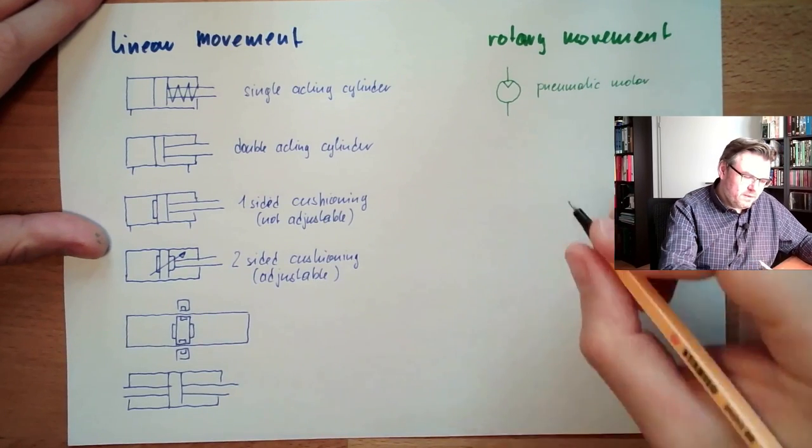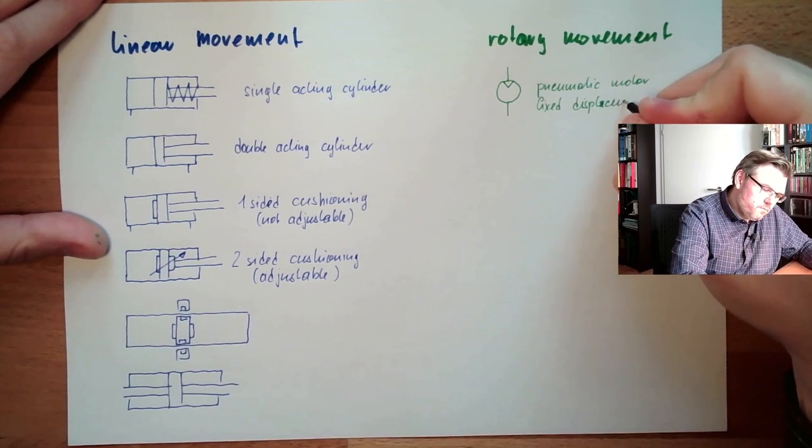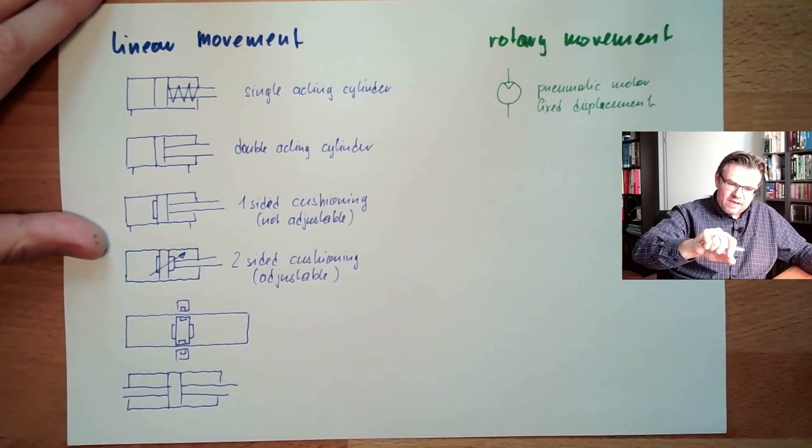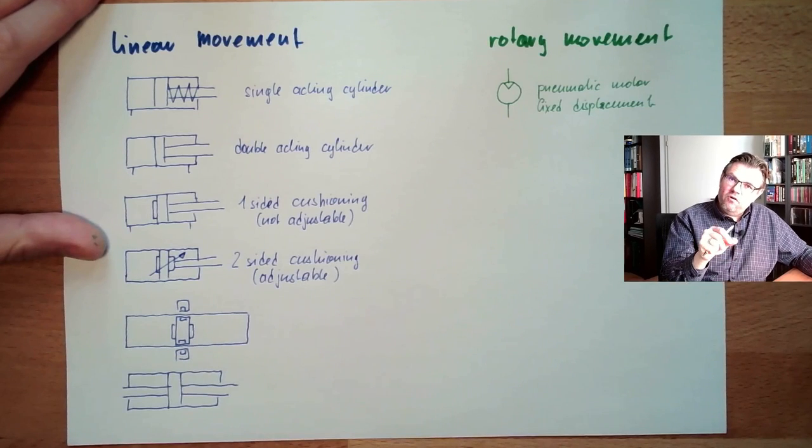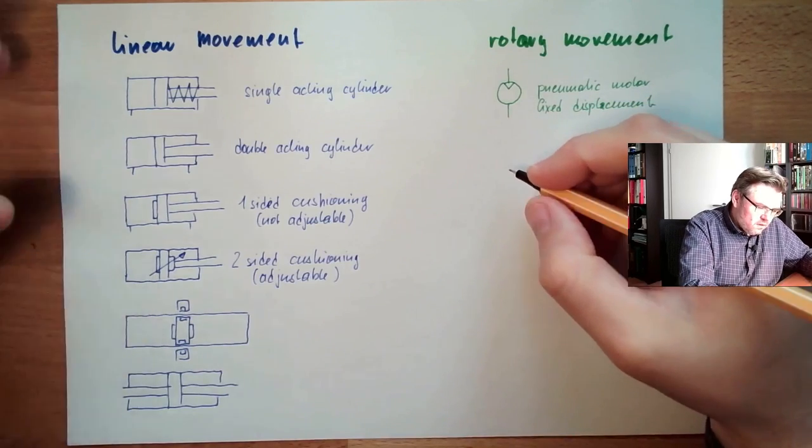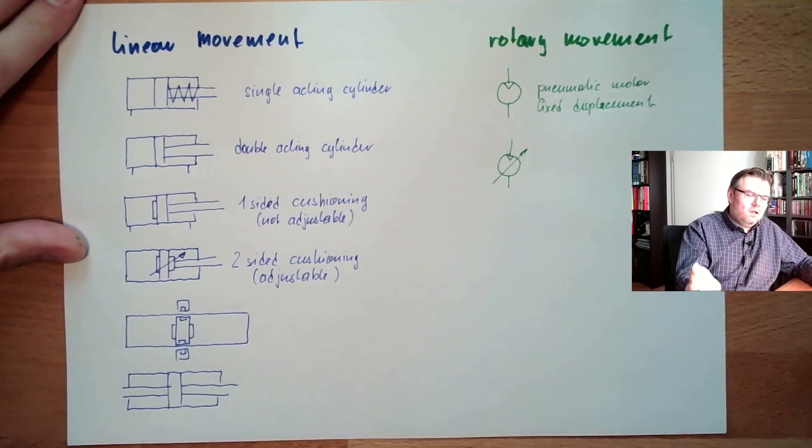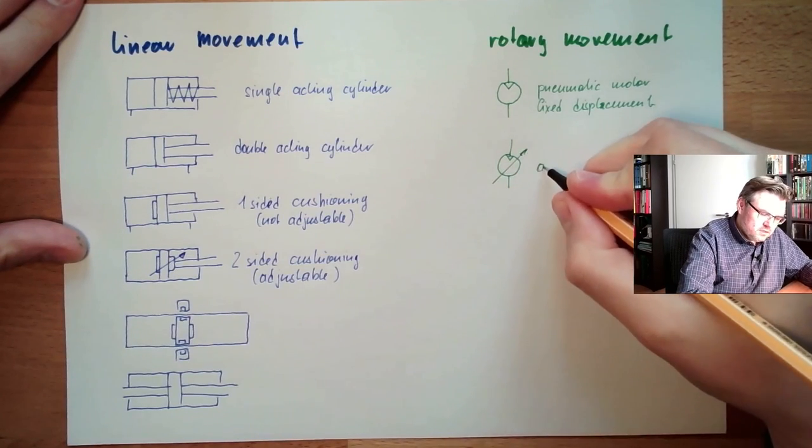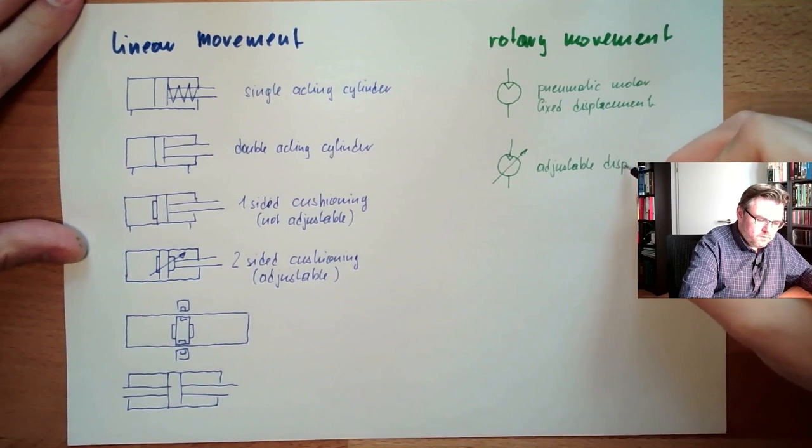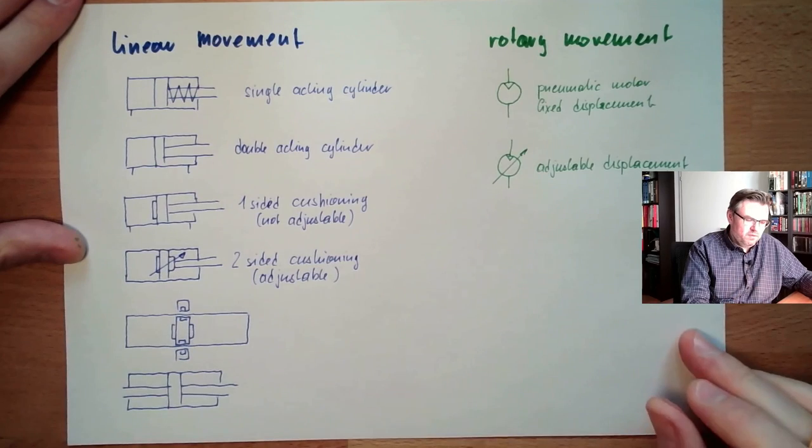With fixed displacement. If I can adjust the displacement, so if I can select somehow how fast this motor is turning with a certain airflow through it, then, of course, it's like here. Of course, it's the symbol of the motor, and now, it's adjustable. Adjustable displacement. Now I can select the speed, actually, this is what it means.